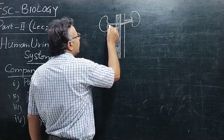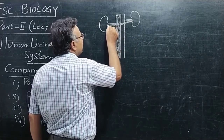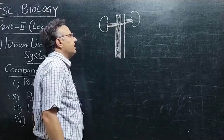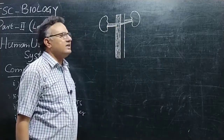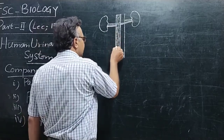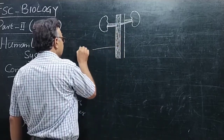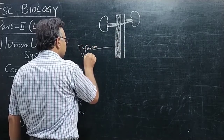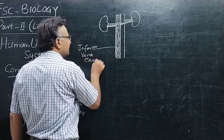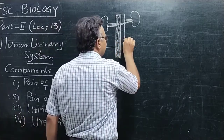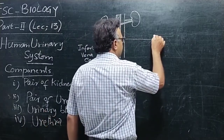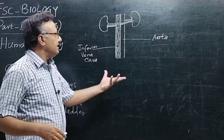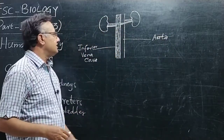اسی طرح سے دونوں طرف سے جو renal veins ہیں وہ kidneys میں سے deoxygenated blood لاکے اس inferior vena cava میں داخل کر رہی ہیں۔ اور یہ دوسری blood vessel جو ہے یہ aorta ہے — بڑی artery جو نیچے کی طرف آ رہی ہے۔